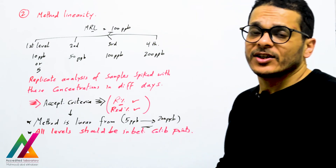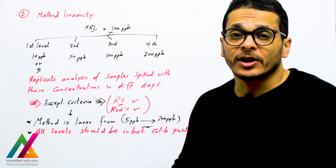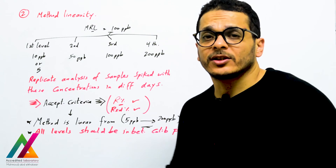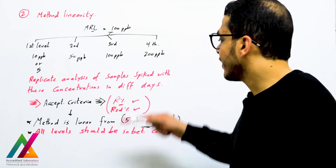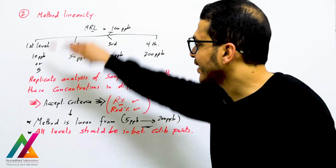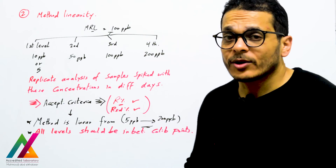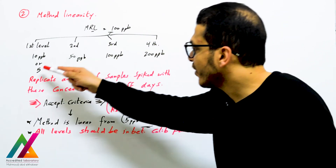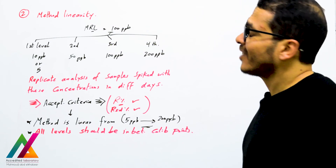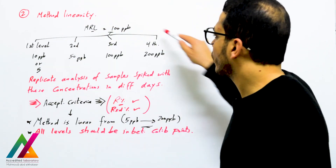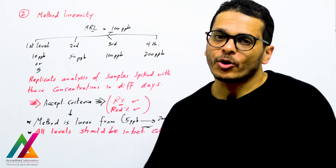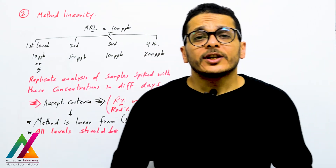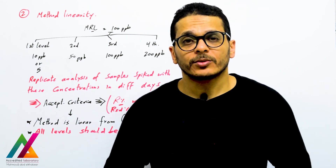The acceptance criteria for method linearity: recovery and relative standard deviation for each spiked sample must be within acceptable limits per the guideline used. For example, recovery should be within 70–120% for each spike sample, and the relative standard deviation for each replicate analysis should be less than or equal to 20%. If all levels meet these criteria, you can state that the method is linear from 5 ppb up to 200 ppb. All concentration levels must remain within your calibration points for accurate quantification.